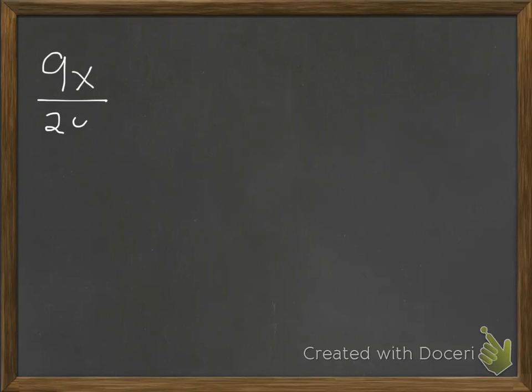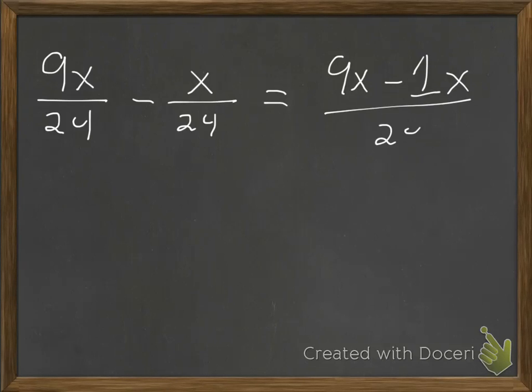Let's do something a little bit more fun. So 9x over 24 minus x over 24. Remember, if it's just x, it's understood that it's a 1x. So we'll have common denominators, so we can say 9x minus 1x all over 24. And we'll go ahead and subtract, and we'll get 8x over 24.